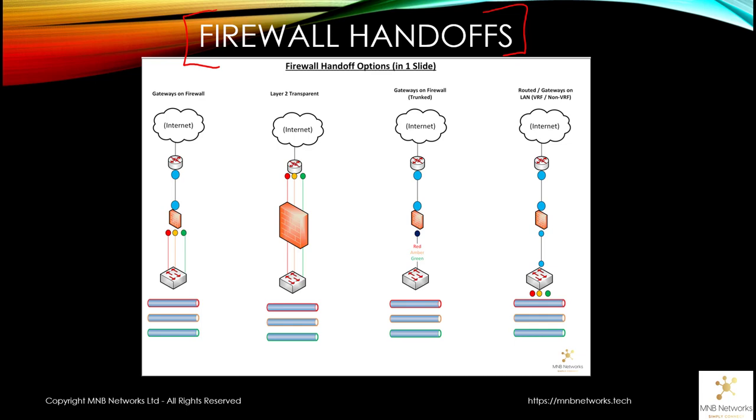Let's start with the gateways on the firewall technique. We have an internet or wide area network, then a customer edge router. The customer edge router has a layer 3 interface which routes to an outside layer 3 interface on the firewall, using either static or dynamic routing. When we focus southbound on the firewall, this is the handover to the local area network, and there are multiple different ways to achieve this.